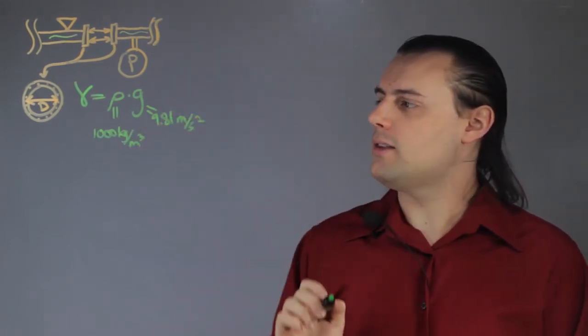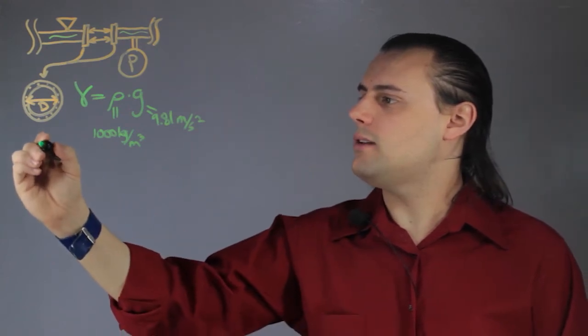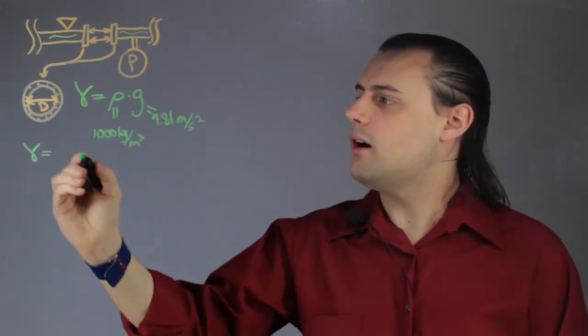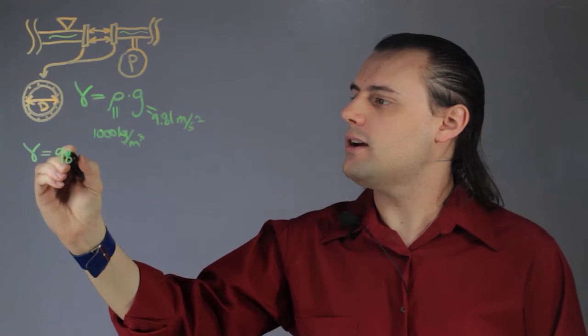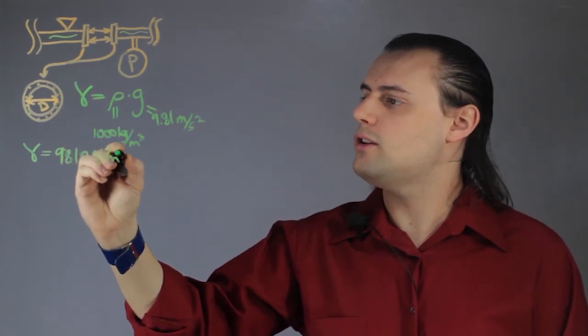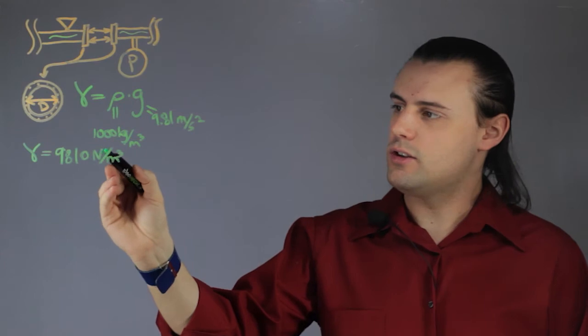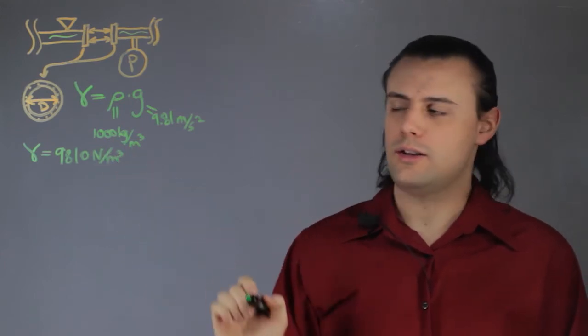So when we multiply these two together, we get a specific weight of 9810 newtons per meters cubed. This is a unit of force divided by a unit of volume.